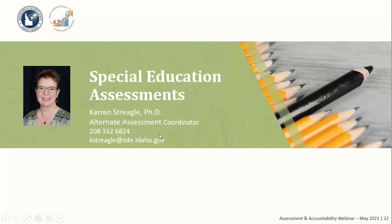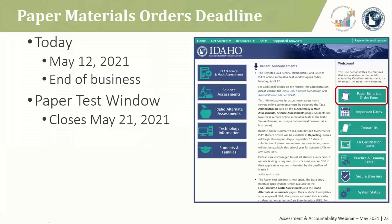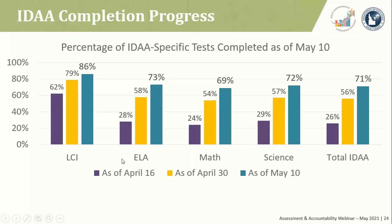Good morning, this is Karen Striegel. First, this is your final reminder that today, May 12th, is the deadline for ordering paper test materials. You must complete and submit the paper materials order form by the end of business today. You will find the link to the paper materials order form on the ISAT portal homepage near the top right-hand column. The paper test window closes on Friday, May 21st — that leaves only seven more days after today to administer paper test forms.